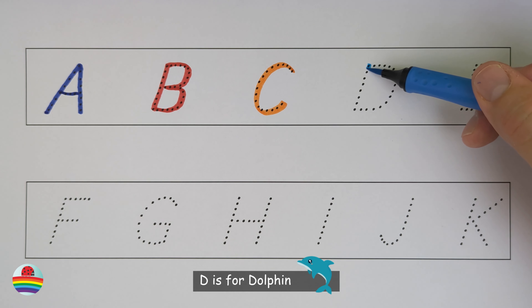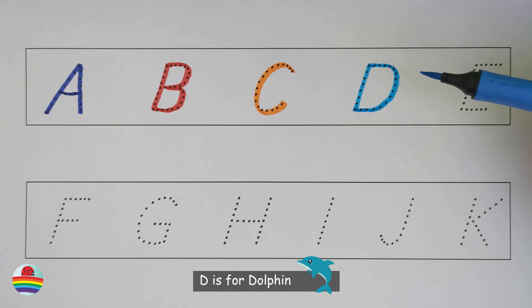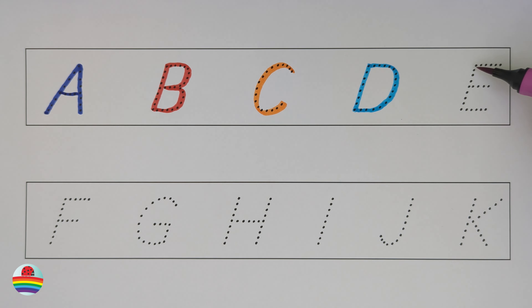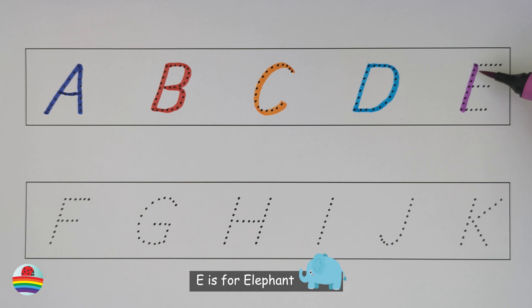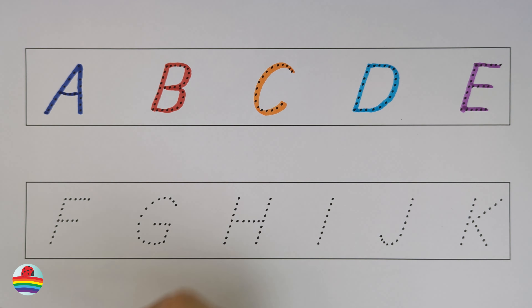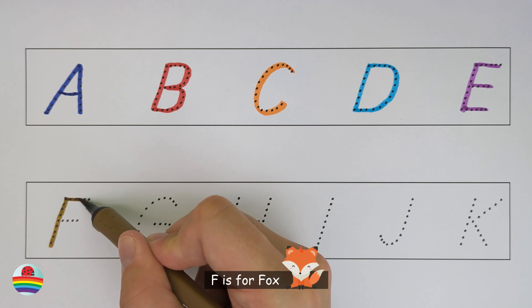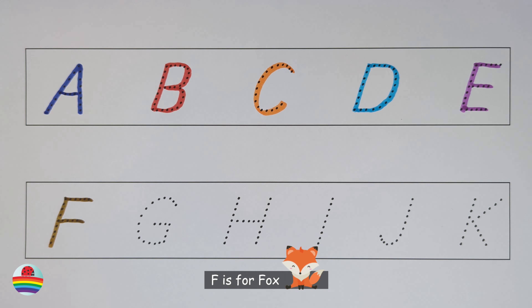D. D is for dolphin. E. E is for elephant. F. F is for fox.